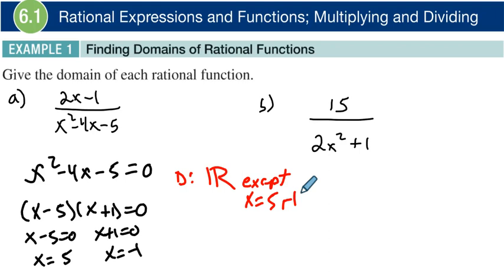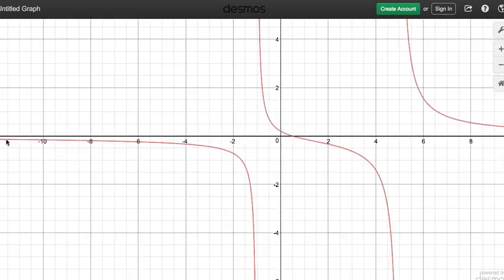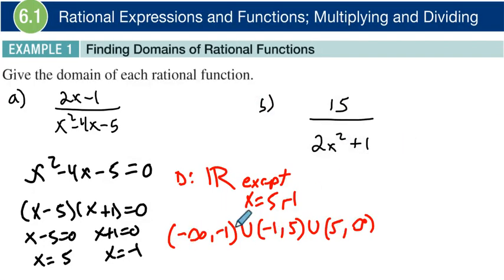But probably when you put this into MyMathLab, they want it in a different way. So the way that they probably want you to do it is like this: you're going to go from negative infinity to negative 1, and then you're going to do union negative 1 to 5, and then union from 5 to infinity. So what this is saying, and this probably makes more sense when you look at it graphically. It goes from negative infinity and then it stops at negative 1. So it's everything here, and then it's everything in between negative 1 and 5, and then starting back at 5 to infinity. That's why we write it like this, and we use the union symbol.